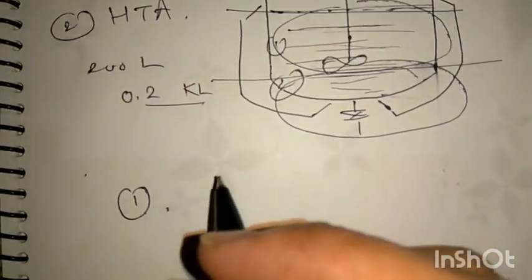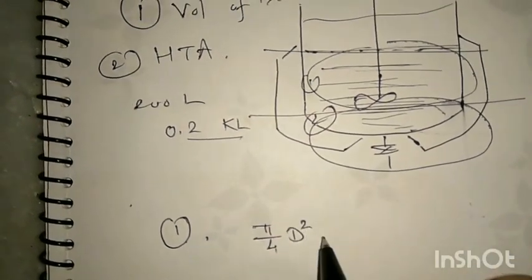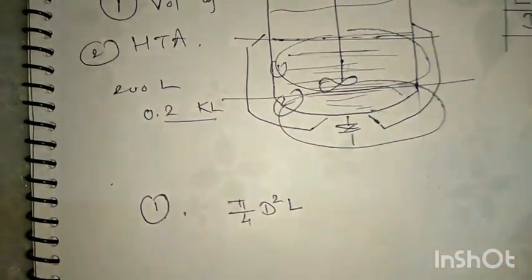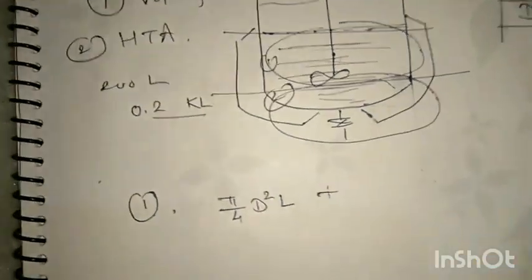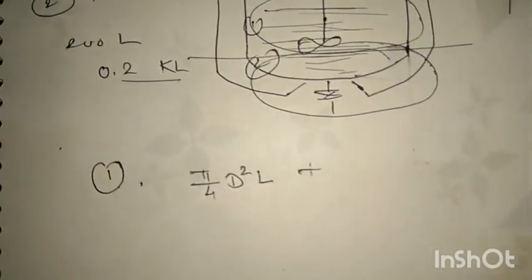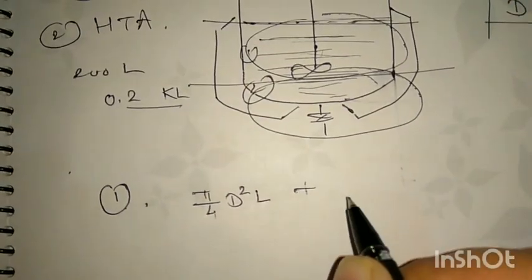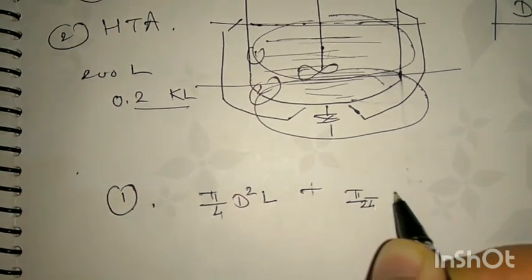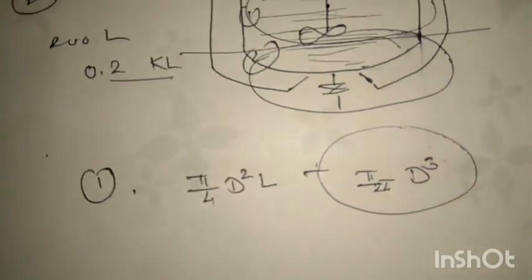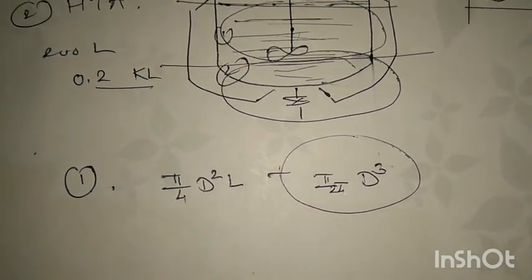For the cylindrical part, the volume formula is π/4 × D² × L — you already know this. For the torispherical head, there is a thumb-rule equation: π/24 × D³. You need to remember this whenever there is a problem involving the torispherical head volume.